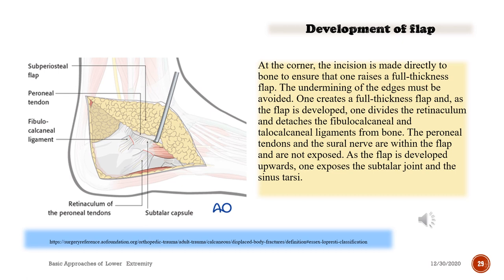Development of flap: at the corner, the incision is made directly to bone to ensure a full-thickness flap. Undermining of edges must be avoided. As the flap is developed, one divides the retinaculum and detaches the fibulocalcaneal and talocalcaneal ligaments from bone. The peroneal tendons and sural nerve are within the flap and are not exposed. Developing the flap upward exposes the subtalar joint and the sinus tarsi.